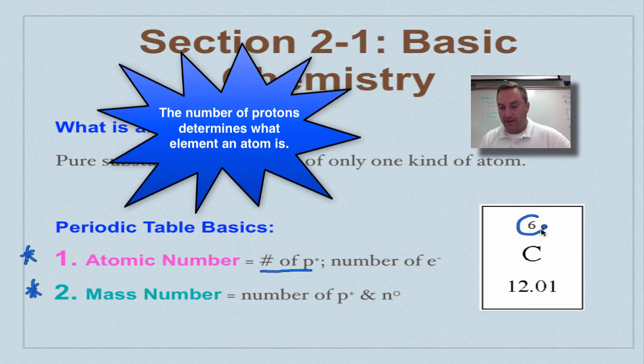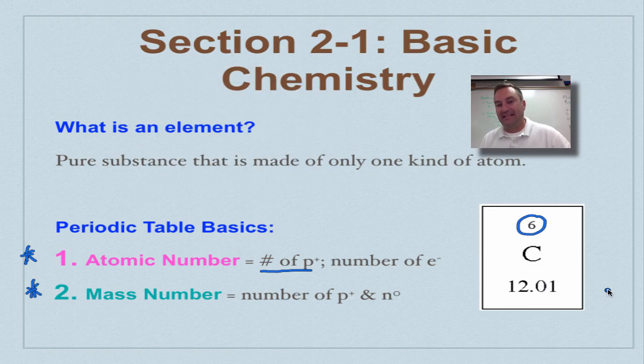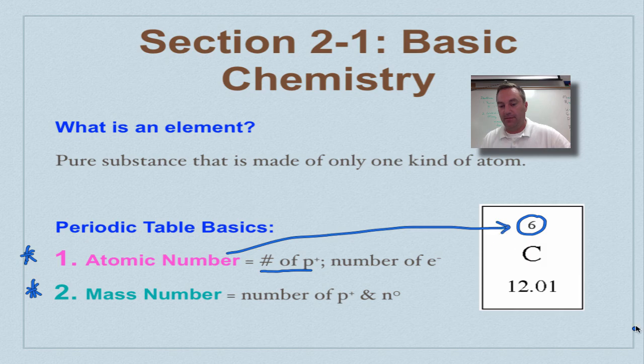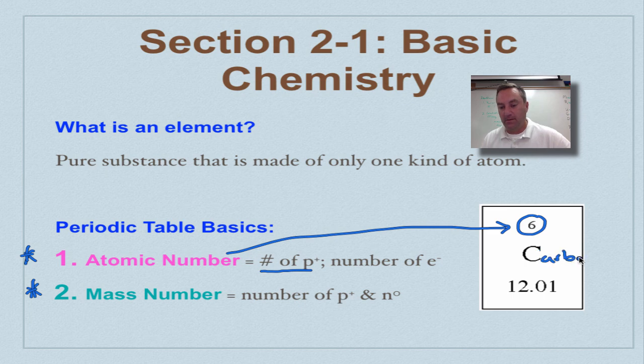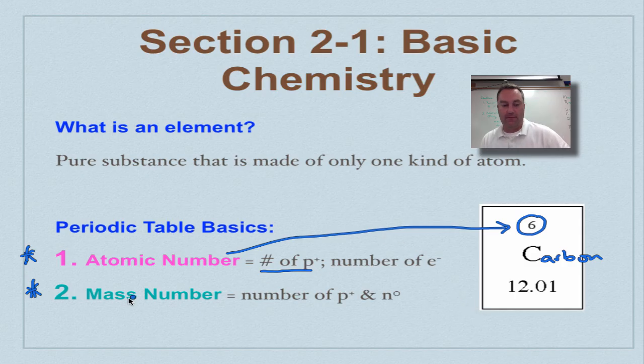If you look right over here, that six is the atomic number. Let me draw a line right there. That's the atomic number. So anything with an atomic number of six is going to be carbon.